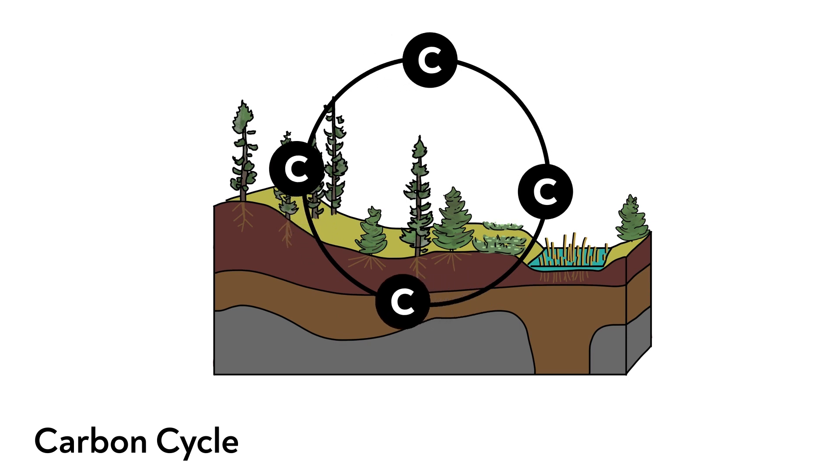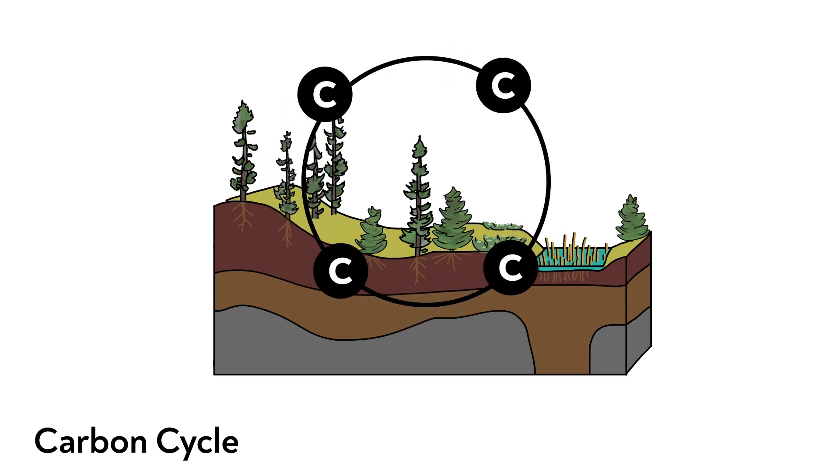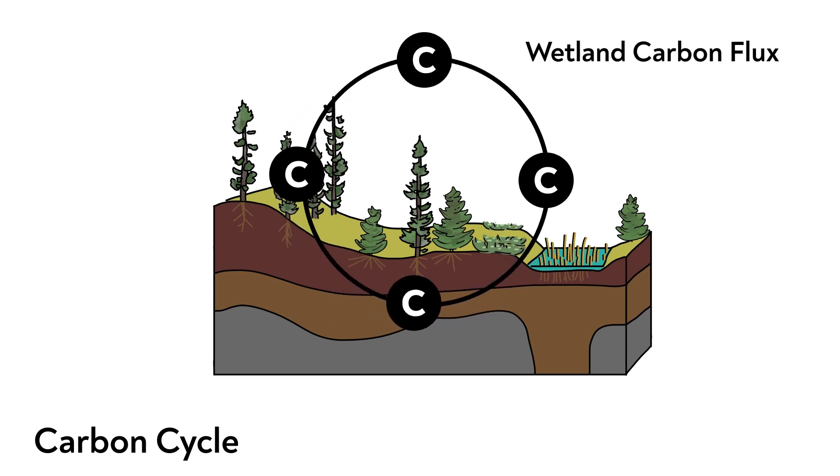In wetlands, the amount of carbon exchanged between vegetation, water, soil, and the atmosphere over a specific amount of time is called a wetland carbon flux.